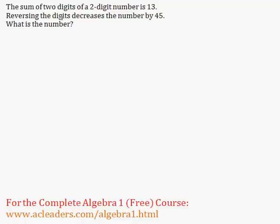The sum of two digits of a two-digit number is 13, so let's say that A plus B is 13. I'm just going to say that the tens digit is A and the ones digit is B.